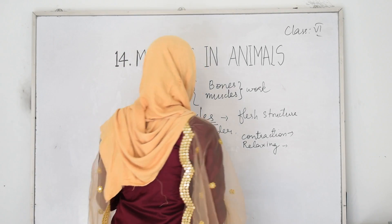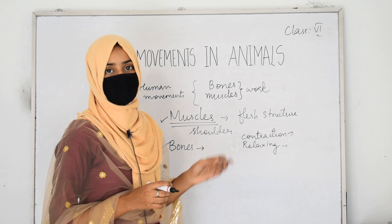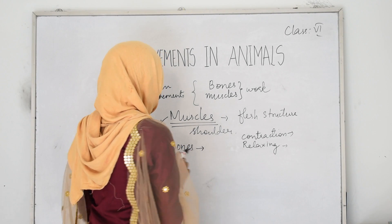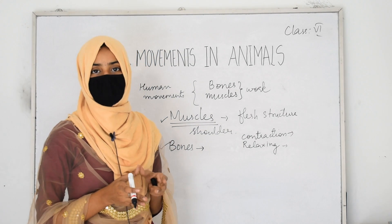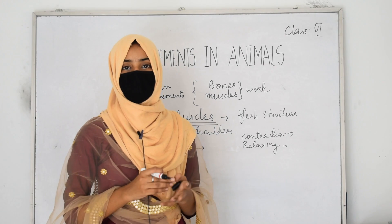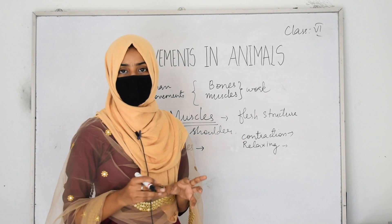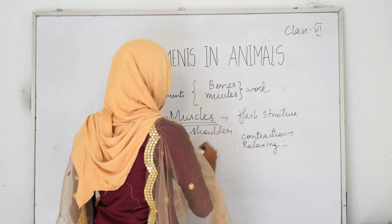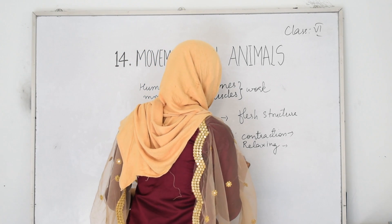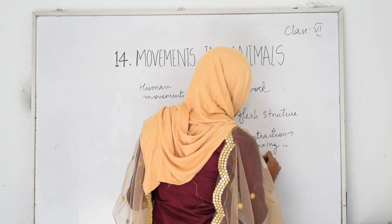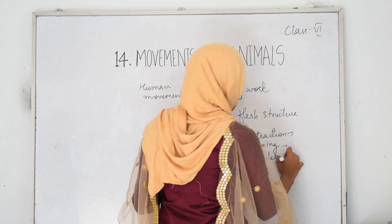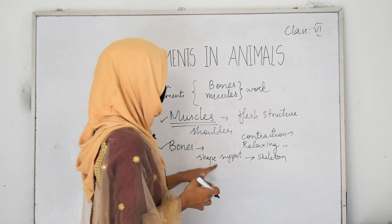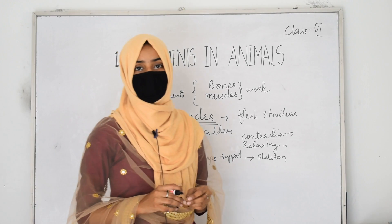Bones are the hard structures present in our body. They are attached to the muscles. The different bones join together at different joints, giving shape and support to our body by making a framework. This framework made up of bones is called the skeleton. The skeleton gives shape and support to our body, and bones and muscles play a major role in movement.